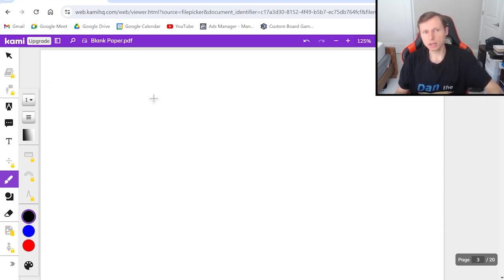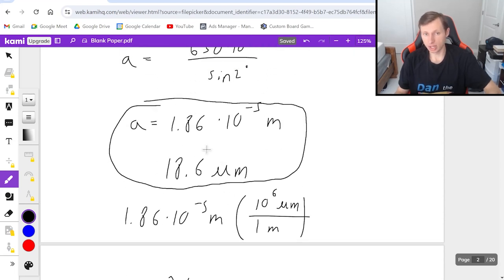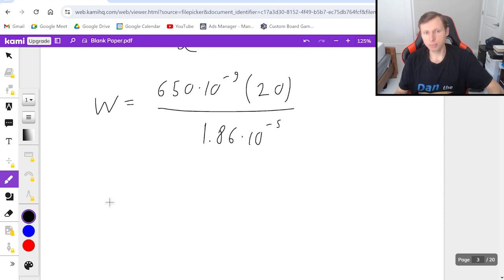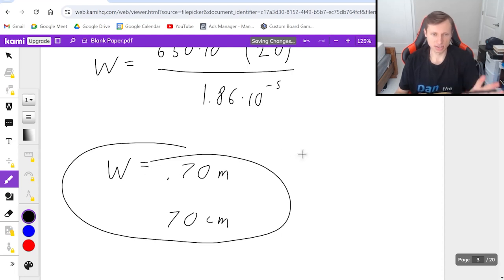For part B, we want the central bright fringe width using w equals lambda l over a. Lambda is 650 times 10 to the minus ninth, l is 20 meters, and a is 1.86 times 10 to the minus fifth. Plugging this into a calculator gives about 0.70 meters, or 70 centimeters. Both answers are correct.